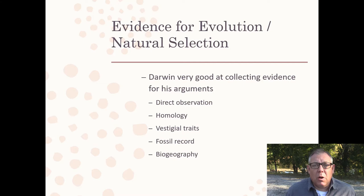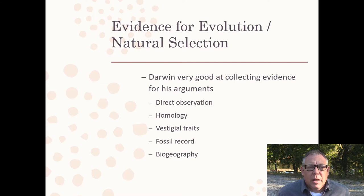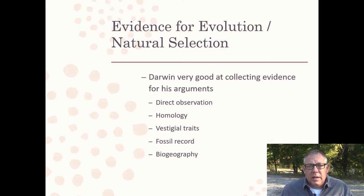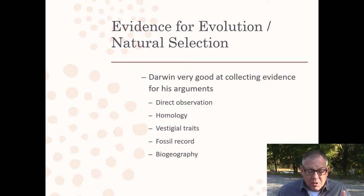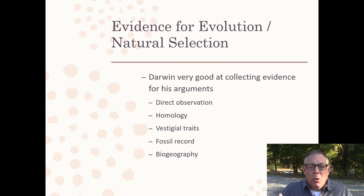This started with Darwin. He was very good at collecting evidence — he came up with the idea after his voyage on the Beagle, and it was like 30 years before he published his book. He was meticulous about collecting evidence because he knew this was a controversial idea. There are several different lines of evidence: direct observation, homology, vestigial traits, the fossil record, biogeography, and the classification of organisms.